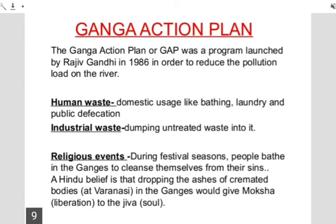That is why in 1985, the Ganga Action Plan was formulated by the Indian government to reduce the pollution level of river Ganga. The main objectives of the Ganga Action Plan include: reduction in the pollution level of the river, improvement in the quality of water through interception, diversion and treatment of domestic sewage, treatment of toxic industrial chemical waste from identified polluting units entering the river, construction of electrical crematoria, and construction of community toilets.